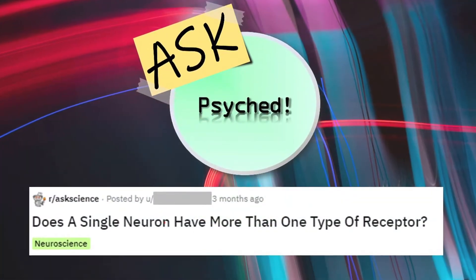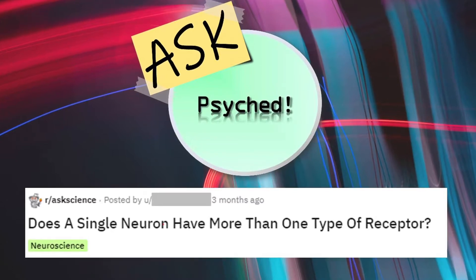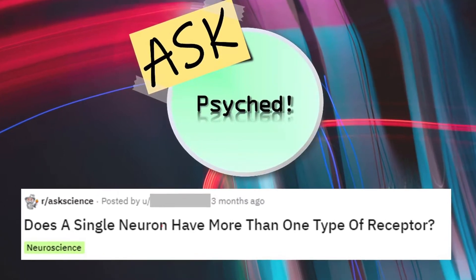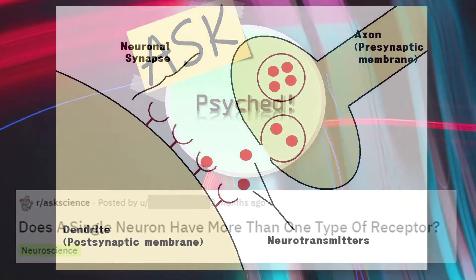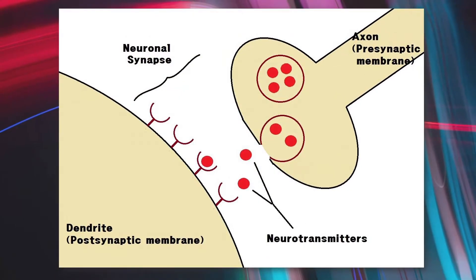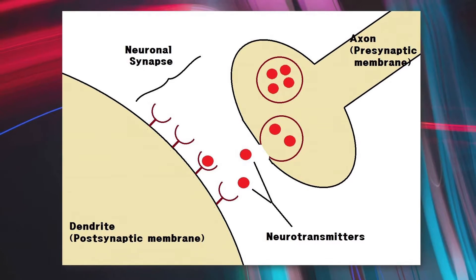Today's question comes from Reddit. Does a single neuron have more than one type of receptor? A cool question, since simplified images and textbooks may not always be able to transmit how complex a single neuron can be.